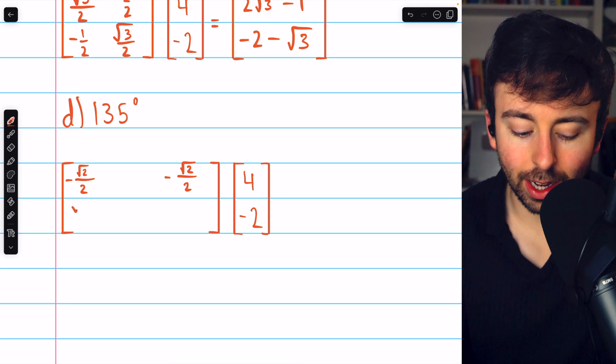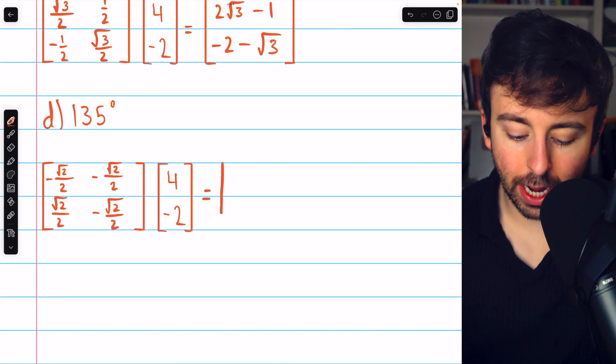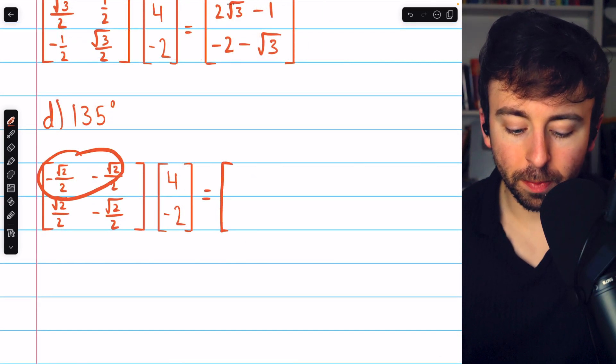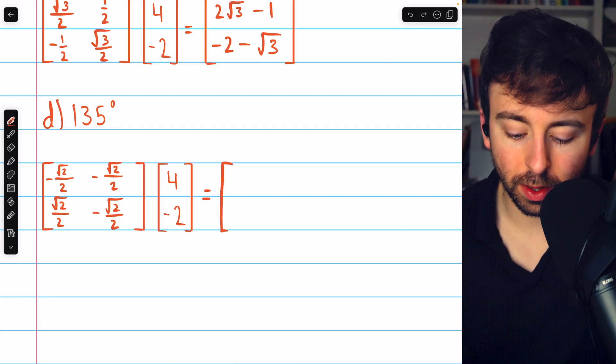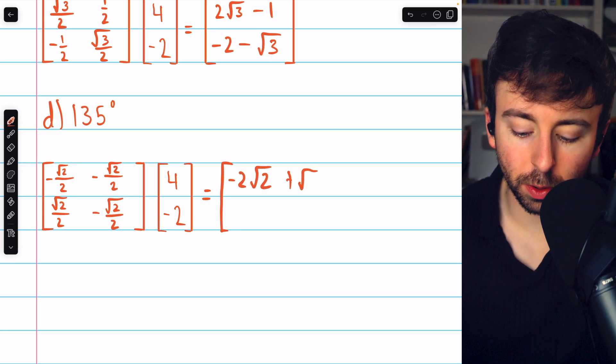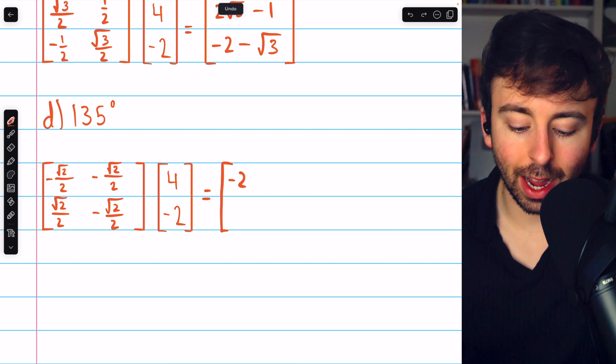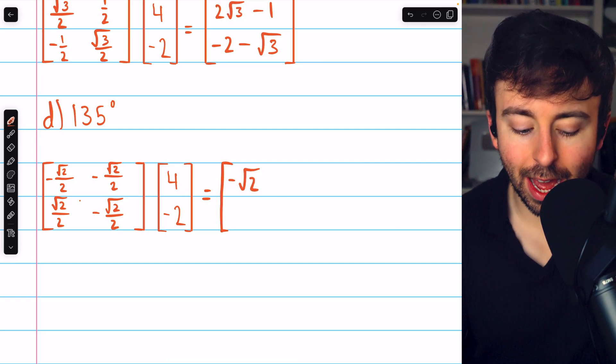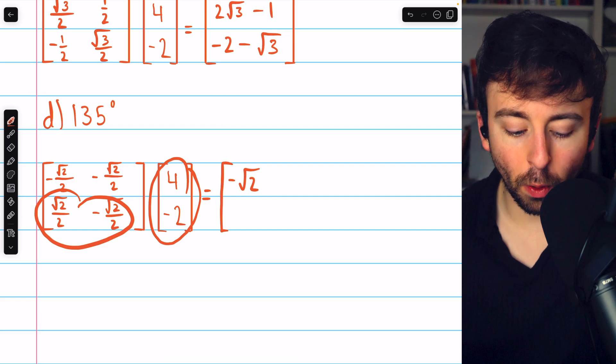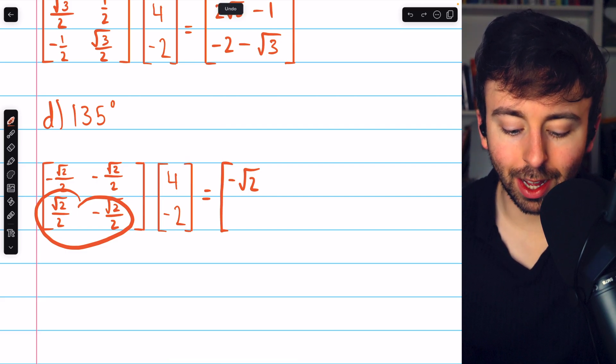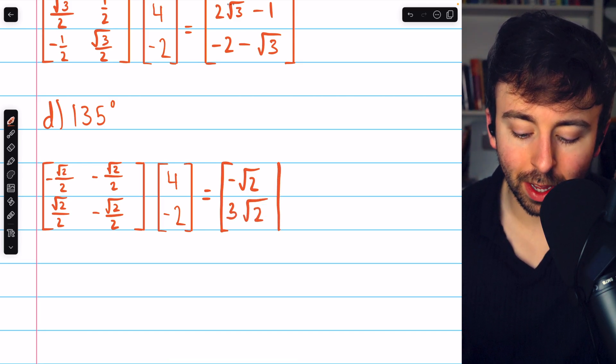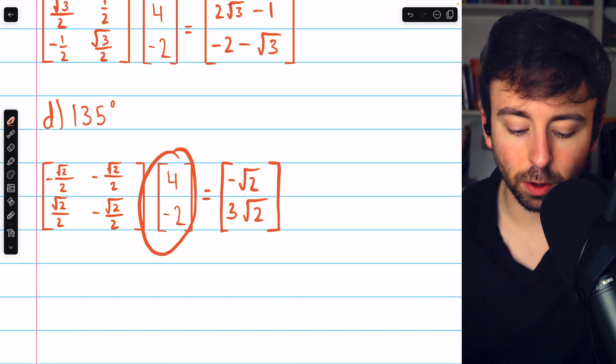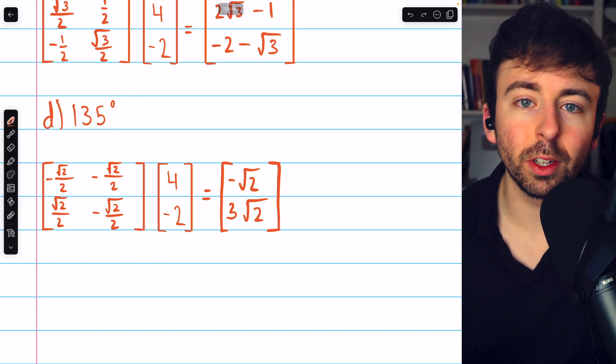We carry out the matrix multiplication. This row and this column gives -2√2 plus √2, which simplifies to -√2. Then this row matched up with this column produces 2√2 plus √2, which is 3√2. So this is the image of this vector after a rotation of 135 degrees about the origin.